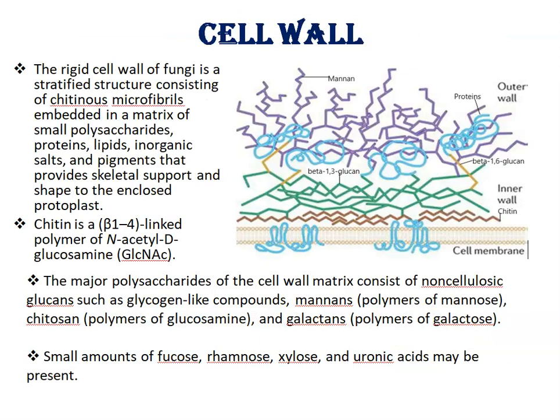The rigid cell wall of fungi is a stratified structure, as seen in this diagram, consisting of chitinous microfibrils embedded in a matrix of small polysaccharides, proteins, lipids, inorganic salts, and pigments — all providing skeletal support and shape to the enclosed protoplast. Chitin is a beta-1,4-linked polymer of N-acetyl-glucosamine.